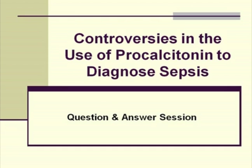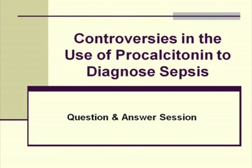Off the top of my head, I can't think that anyone has looked at that specifically with procalcitonin, but there's no reason why procalcitonin shouldn't continue to be a useful marker in those patients. The fever that's part of the systemic immune response to infection is driven by the cytokines. Cooling the patient obviously helps, but it doesn't necessarily stop the cytokines from being produced, and I don't think it would stop PCT from being produced. A very common theme in the PCT literature is that it's very well correlated with the degree of organ dysfunction—the more organ dysfunction and tissue injury, the higher the procalcitonin levels.